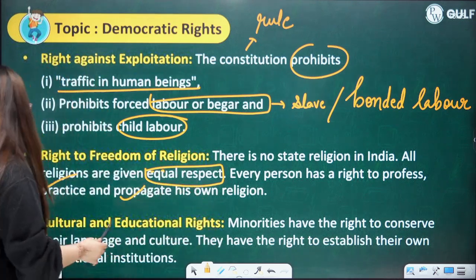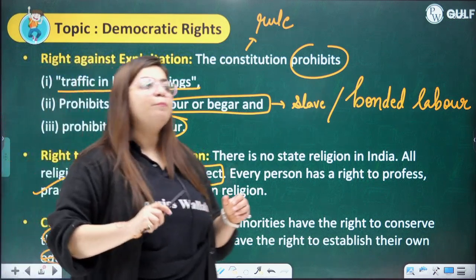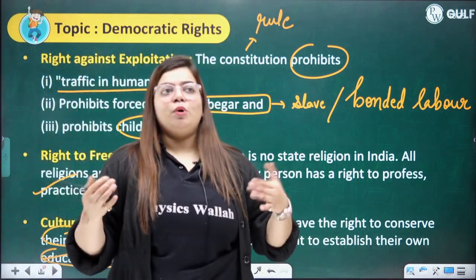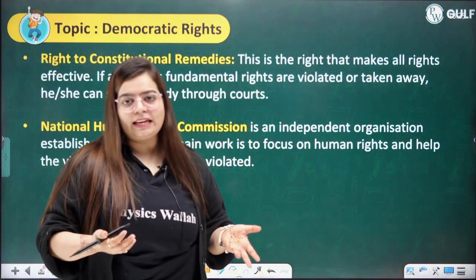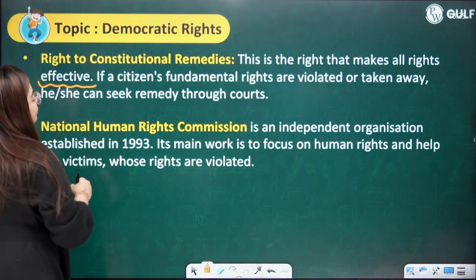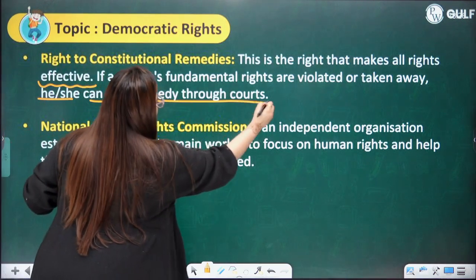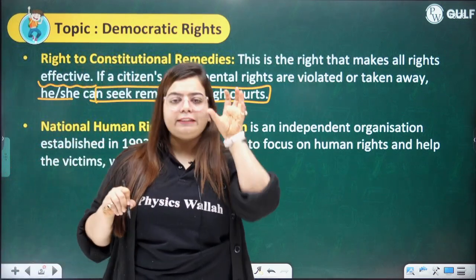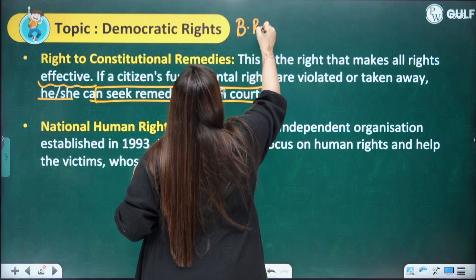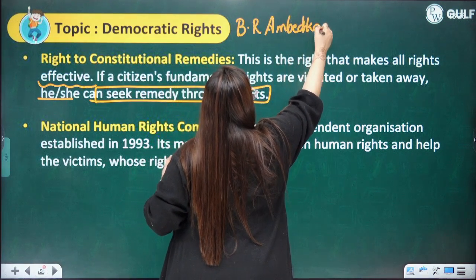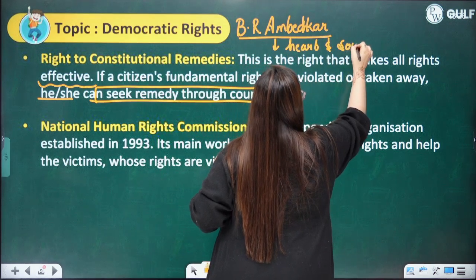Revising Cultural and Educational Rights: minorities and tribes have the right to conserve their own language and culture, and the right to establish their own educational institutions. For the poorer sections of society, the government provides free education to all. Revising Right to Constitutional Remedies: this right makes all other rights effective. If a citizen's fundamental rights are violated or taken away, he or she can seek remedy through the court. This is why BR Ambedkar — Bhimrao Ambedkar — gave this right the name 'heart and soul of the constitution.'